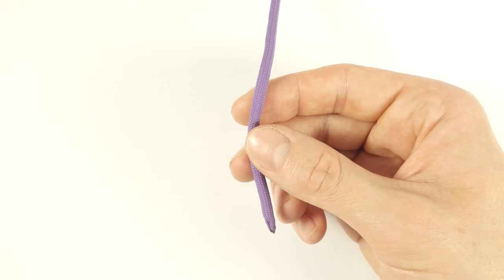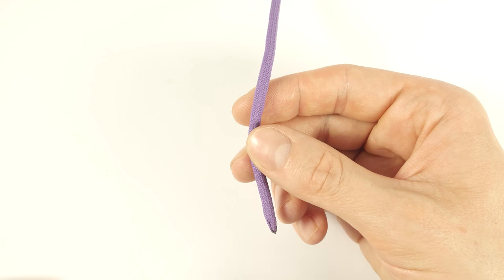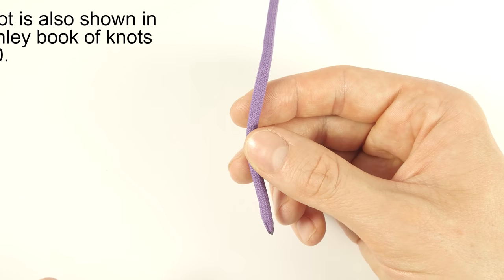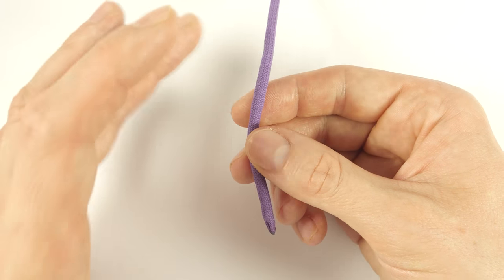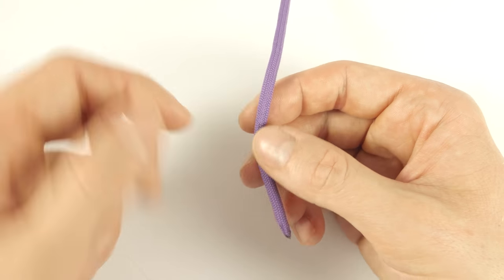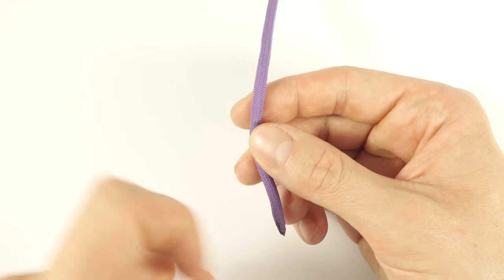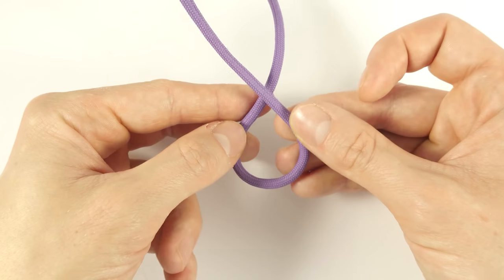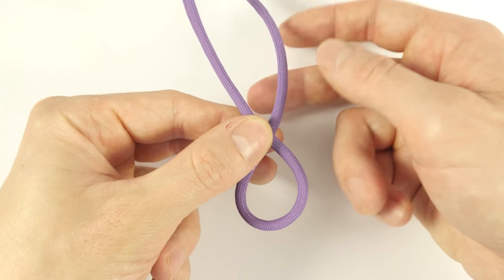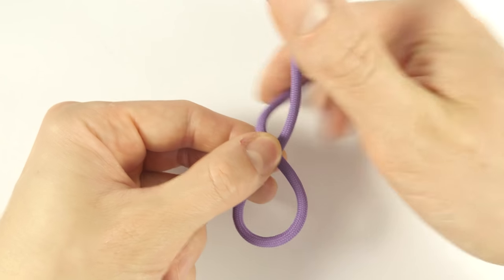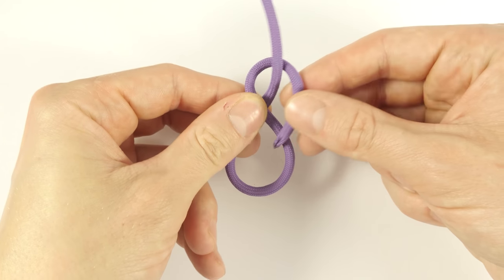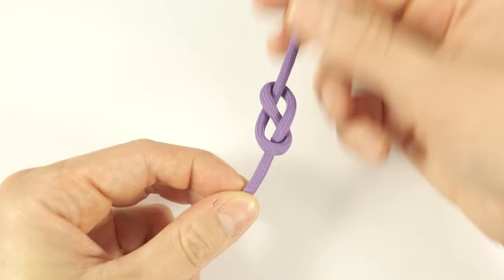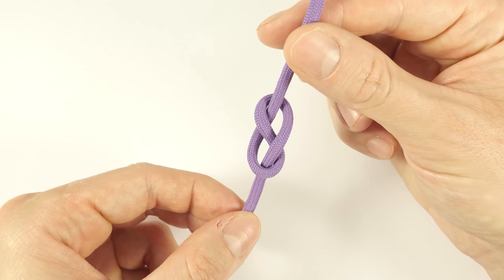So first of all, the most common way for using the figure 8 knot is as a stopper knot. This is the basic form. You take an end of a piece of rope and you do a figure 8. So a loop, then behind the standing end and back into the first loop. And this is the figure 8 knot.